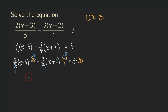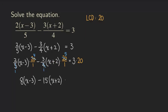The next step is to clean up the expression. We have a 2 on the outside of the parentheses and also a 4 here, so when we multiply 2 and 4 together, we get 8. The stuff inside the parentheses we just copy: x minus 3. Then we have minus, and we multiply the numbers on the outside of the parentheses: 3 and 5 give us 15, and then x plus 2. On the right-hand side, 3 times 20 gives us 60. Now we have a simpler equation.